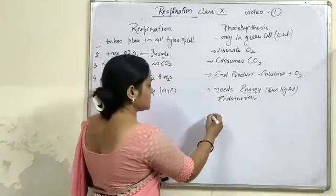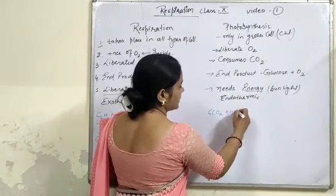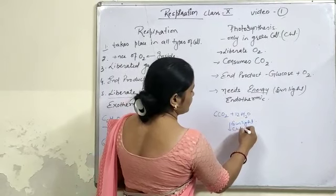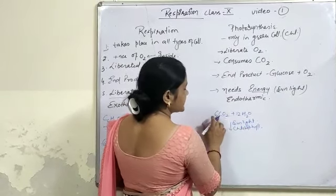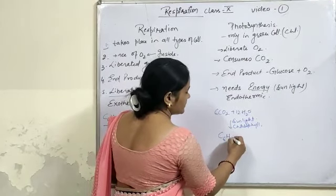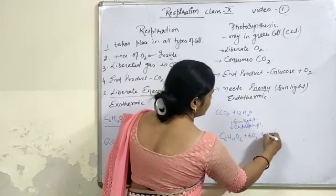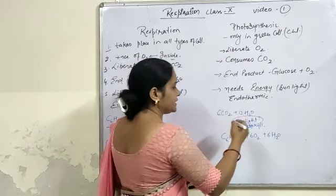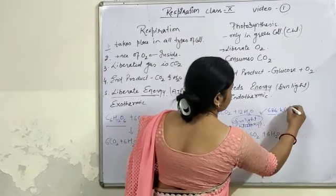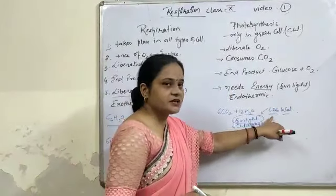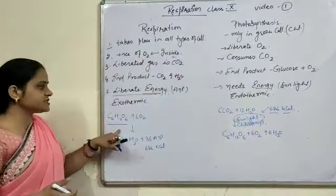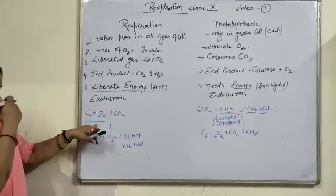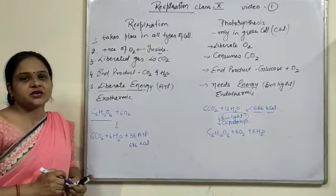For the photosynthetic reaction, 6 molecules of CO2 and 12 molecules of H2O react in the presence of sunlight and chlorophyll to form 1 molecule of glucose plus 6 molecules of oxygen plus 6 molecules of H2O. The sunlight provides 686 kilocalories of energy. Since energy is required, this is an endothermic process, while respiration releasing heat is an exothermic process. This covers all the differences between respiration and photosynthesis.